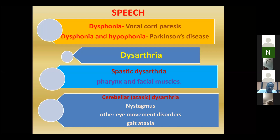Cerebellar dysarthria results from cerebellar abnormality affecting speech. When the cerebellum is not functioning normally, it causes alteration of speech. Nystagmus — oscillatory movement of the eyes — and gait ataxia, where the patient walks improperly, along with dysarthria in the same patient suggest cerebellar abnormality. If there is no nystagmus and no gait abnormality, the cerebellum may not be involved.